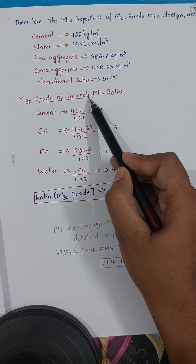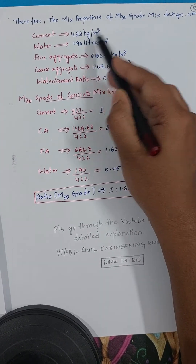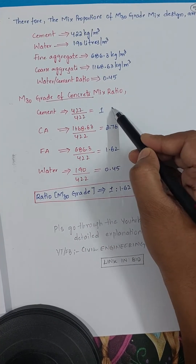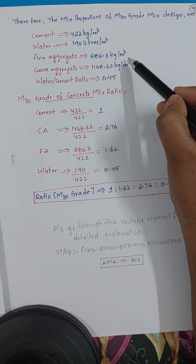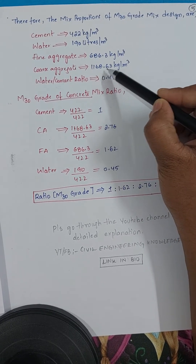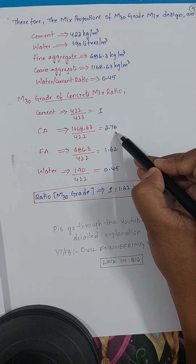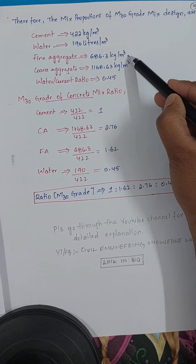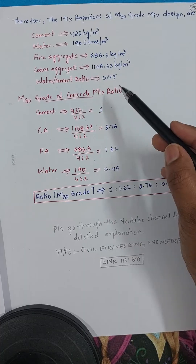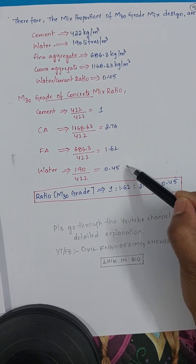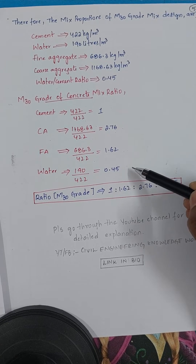The mix ratio for M30 grade concrete: cement ratio = 422/422 = 1; coarse aggregate ratio = 1168.63/422 = 2.76; fine aggregate ratio = 686.3/422 = 1.62; water ratio = 190/422 = 0.45. So the final mix ratio is 1 : 1.62 : 2.76 with a water cement ratio of 0.45.